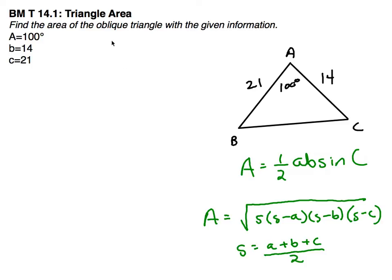In this problem, we were asked to find the area of an oblique triangle, and an oblique triangle is just a non-right triangle with the given information. Angle of 100 degrees, one side is 14 and the other side is 21.